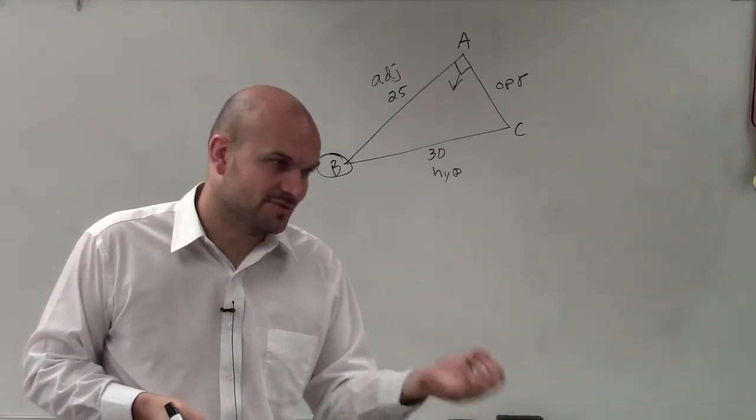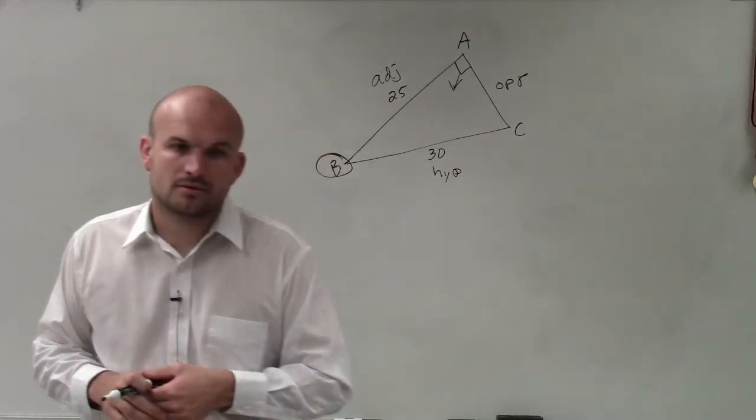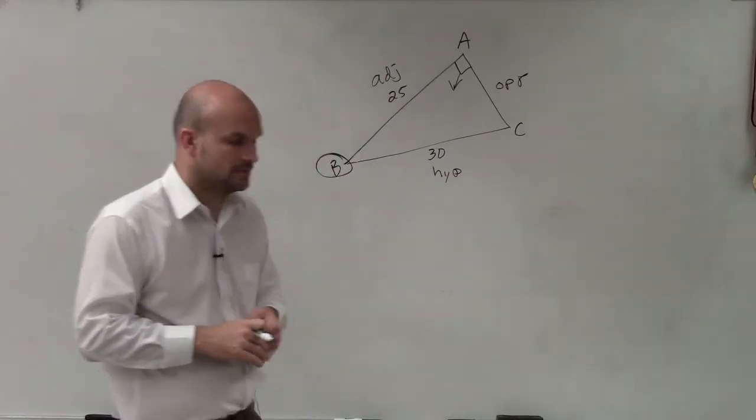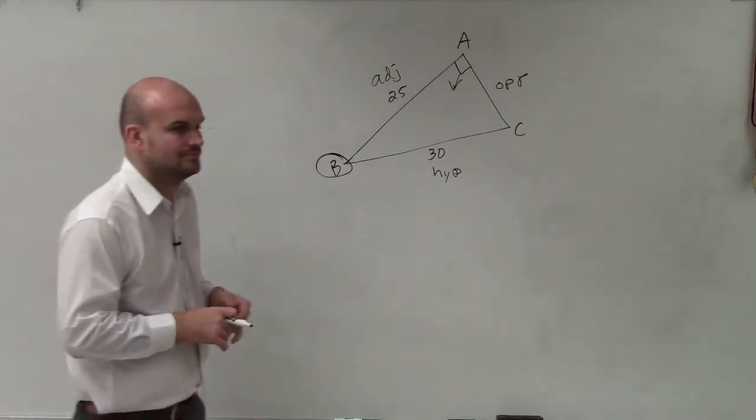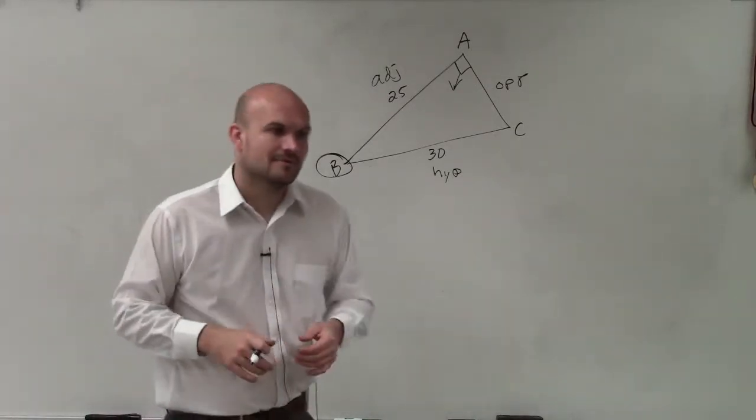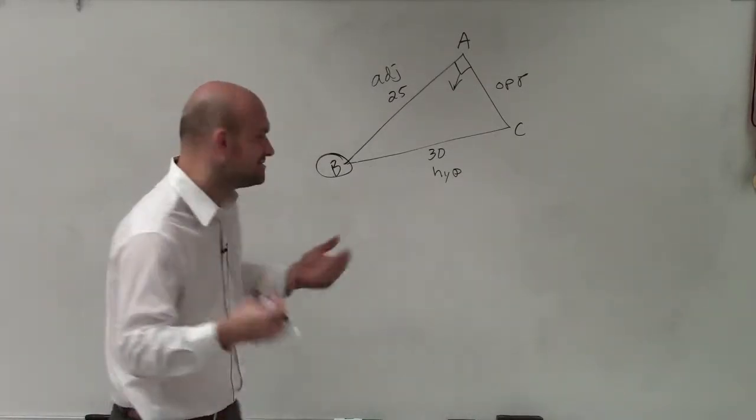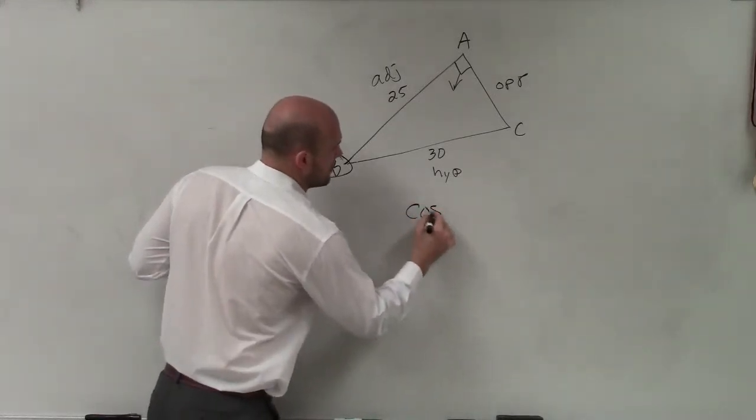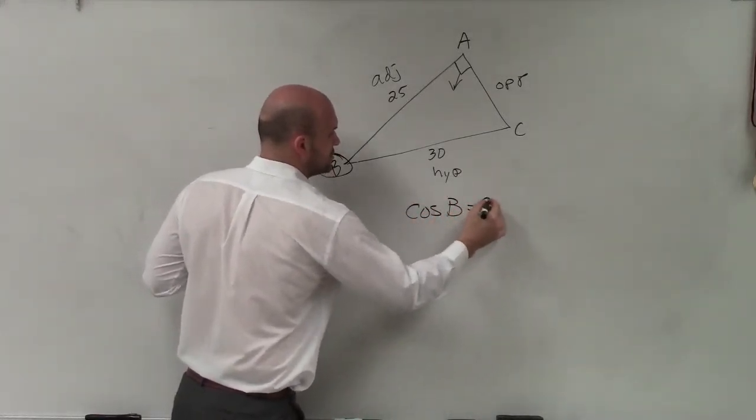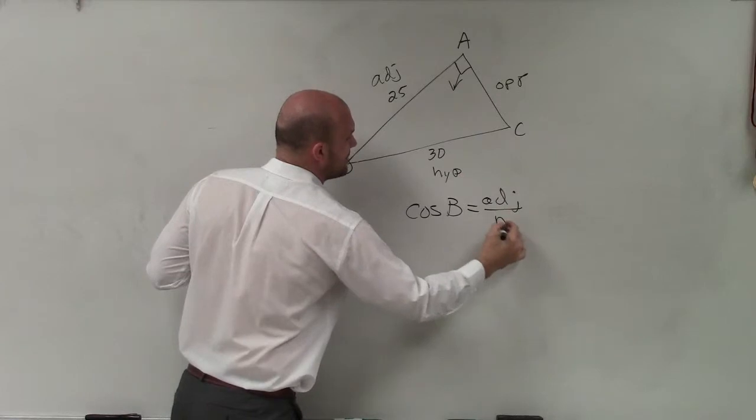And Jacob, do you remember which function deals with adjacent and the hypotenuse? Cosine? Cosine. Cosine of B equals the adjacent over the hypotenuse.